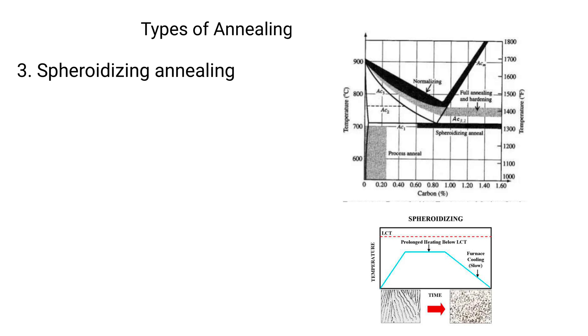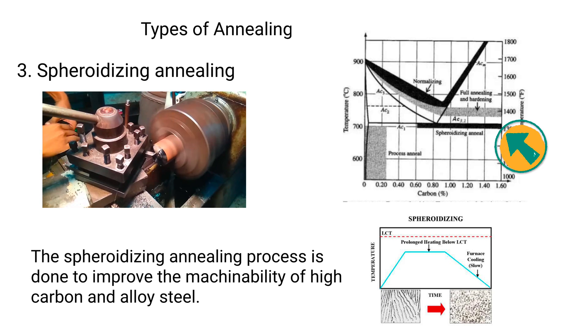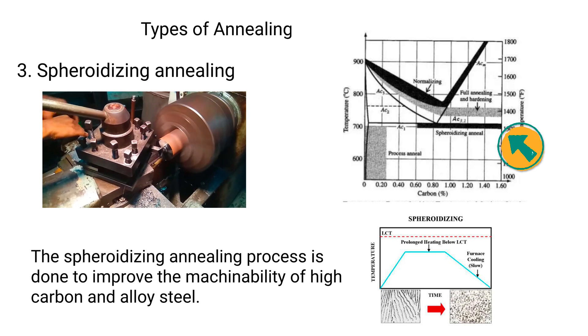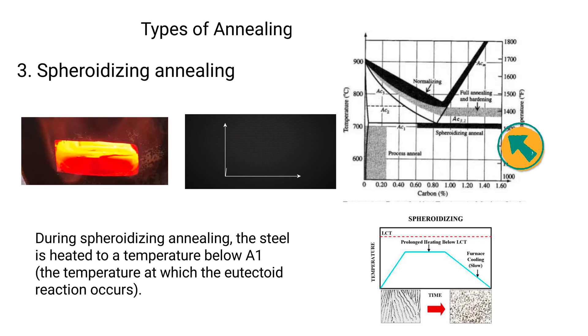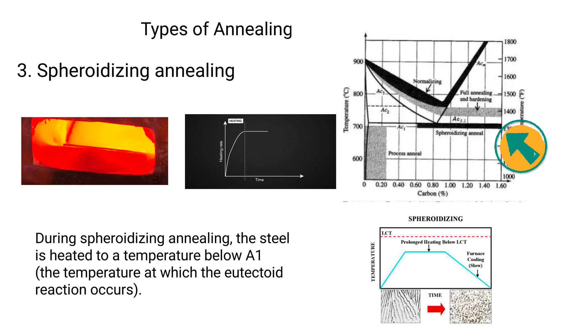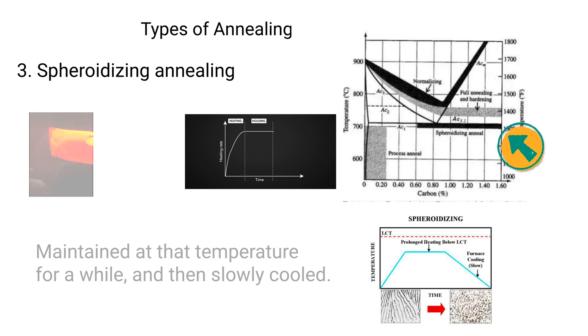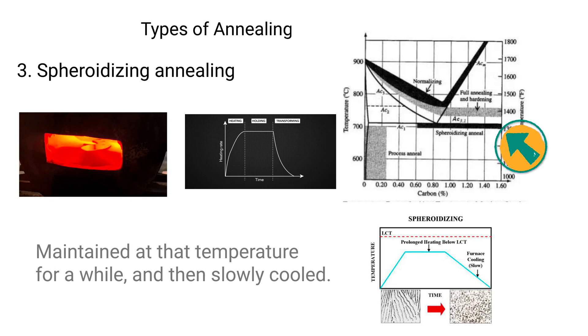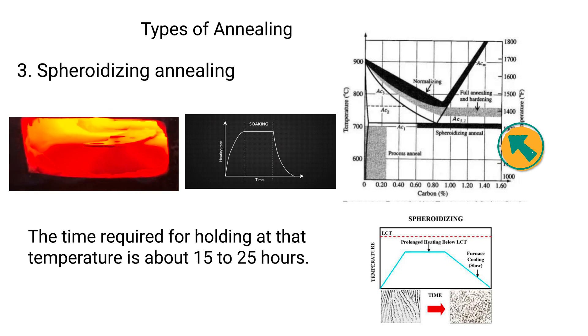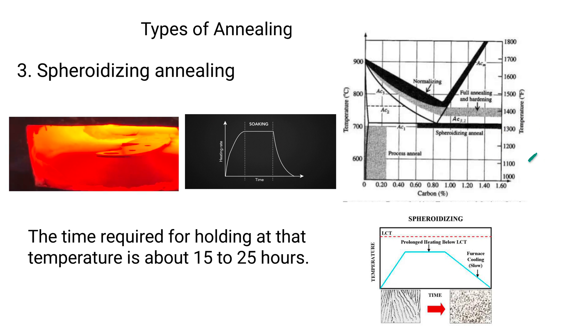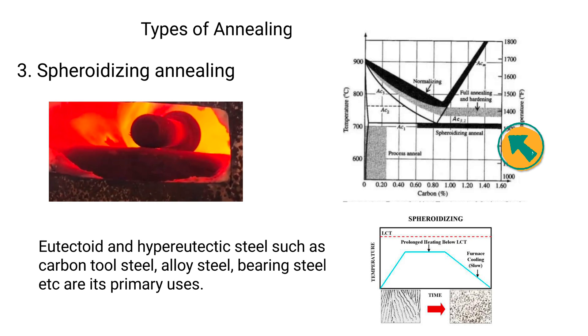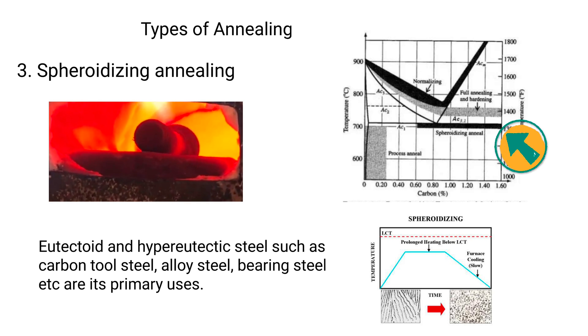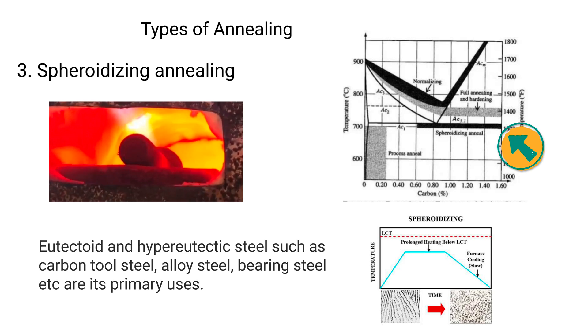3. Spheroidizing annealing. The spheroidizing annealing process is done to improve the machinability of high carbon and alloy steel. During spheroidizing annealing, the steel is heated to a temperature below A1, the temperature at which the eutectoid reaction occurs, maintained at that temperature for a while, and then slowly cooled. The time required for holding at that temperature is about 15 to 25 hours. Eutectoid and hypereutectoid steels such as carbon tool steel, alloy steel, bearing steel, etc., are its primary uses.